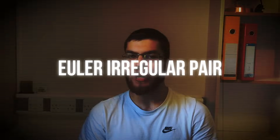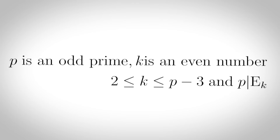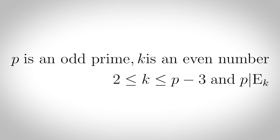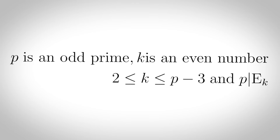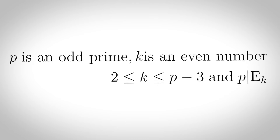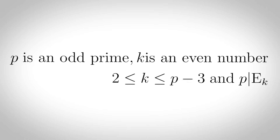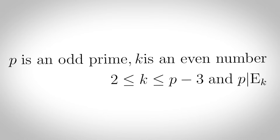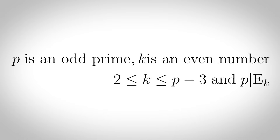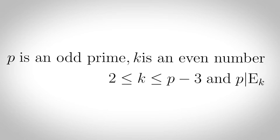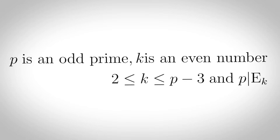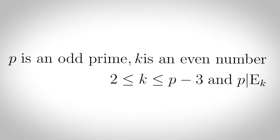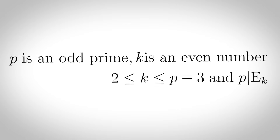Euler irregular primes (pair definition): a prime p such that p and p minus 3 is an Euler irregular pair. An Euler irregular pair is a pair where p is an odd prime and k is an even number with 2 ≤ k ≤ p minus 3 and p divides the Euler number e sub k.